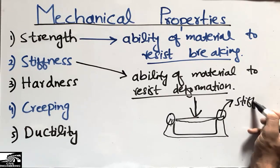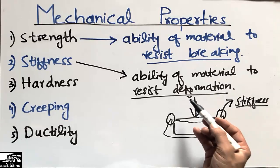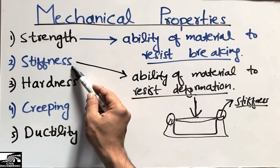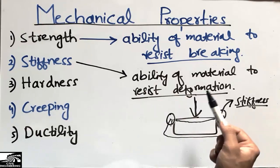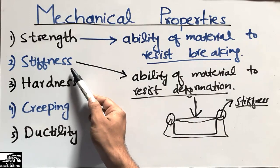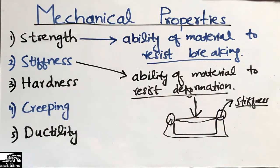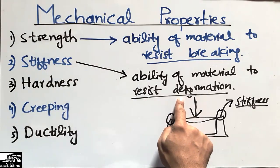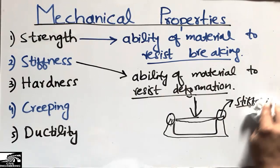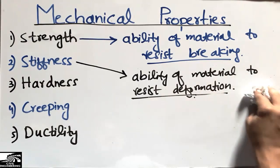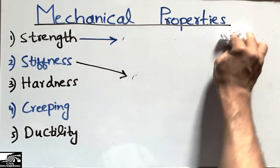The more the resistance to deformation, the more stiff the material is, and the less flexible it will be. The less deformation that occurs, the more stiff is the material. The more deformation that occurs, the less stiff is the material. So stiffness is totally related to the resistance to deformation of a material.